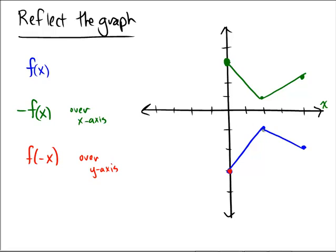For this point at 2, negative 1, the x coordinate is going to now become negative 2 because we're taking the opposite of the x coordinate, so that's going to go over here. Notice the y stays the same.